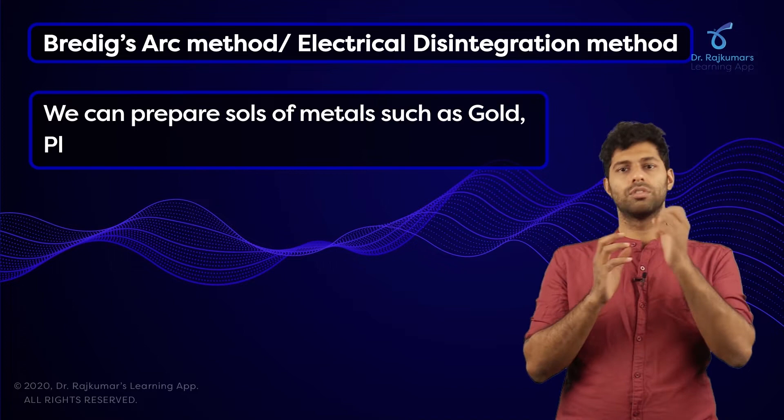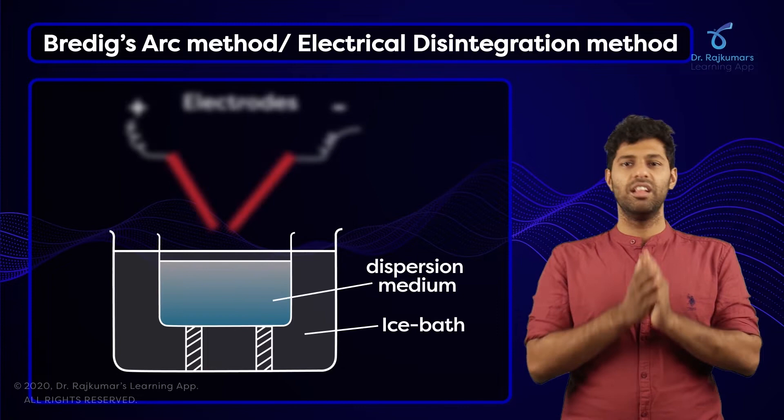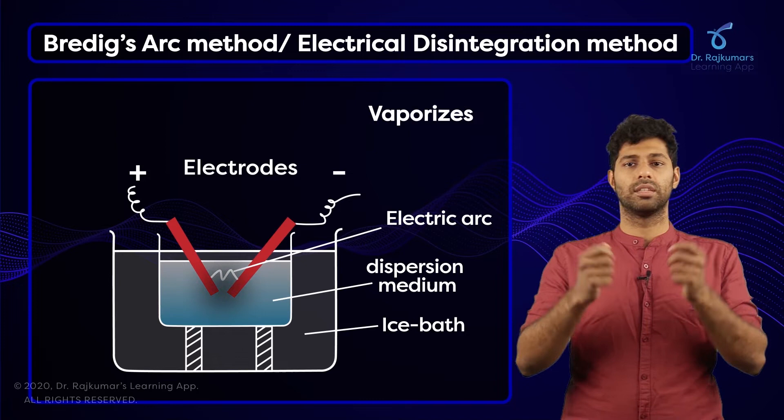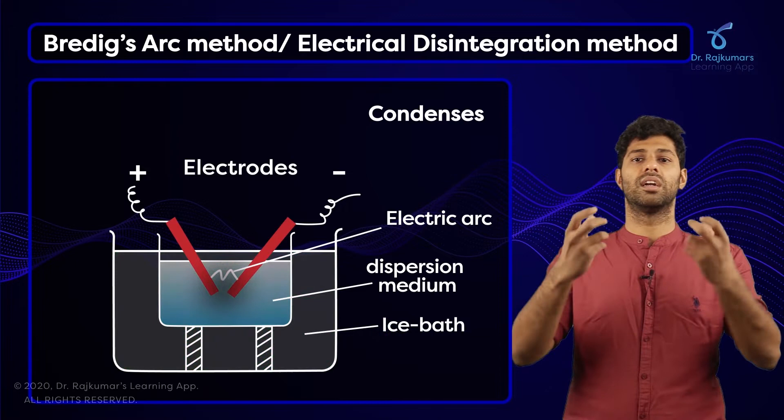What exactly happens in this method? We have two electrodes of the metal immersed in the dispersion medium. When an electric arc is struck, we find that these electrodes vaporize — that is, the metals of the electrode vaporize — and because there is the presence of an ice bath, they start condensing and these form colloidal particles.